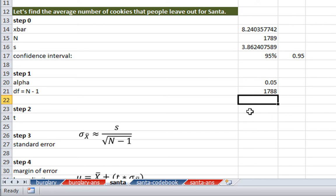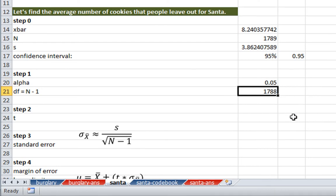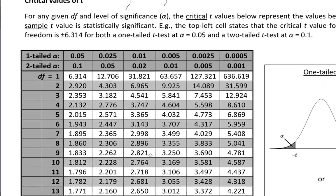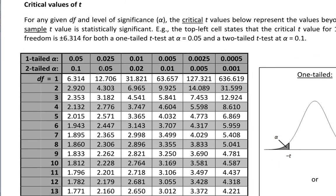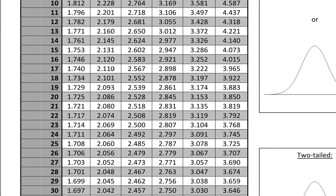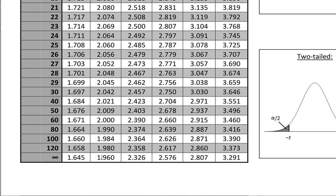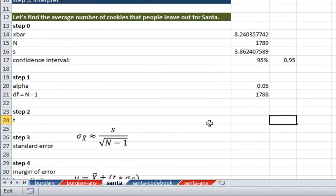Step 2 is to calculate t. Now there's a couple different ways we could do this. One way is to look up our t value in the table. All we need to know is our alpha and our degrees of freedom. So if we go to our t table, our alpha, we're doing the two-tailed alpha, is .05. Our degrees of freedom was quite large. We had several thousand people. So we're going to go with the infinity value here, which is going to be 1.96 for our t value.